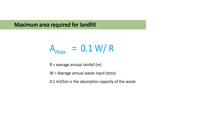The next formula is the maximum area required for a landfill site. For the calculation of the area, we need the average annual rainfall and the average annual waste input. The formula is: Maximum area = 0.12 × W divided by R, where R is the average annual rainfall, W is the average annual waste input, and 0.12 accounts for the absorption capacity of the landfill for the particular waste.